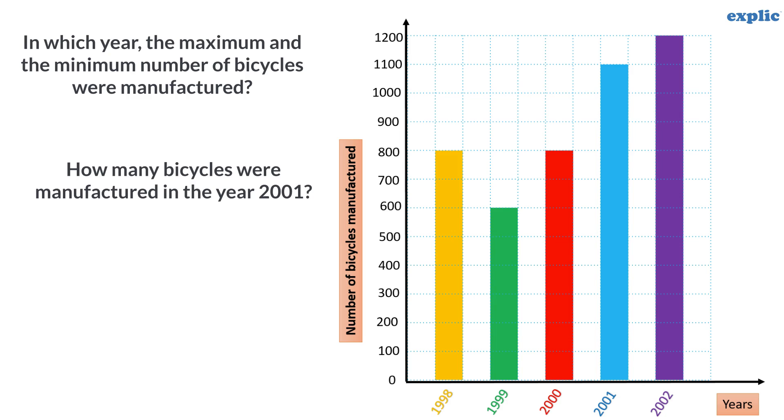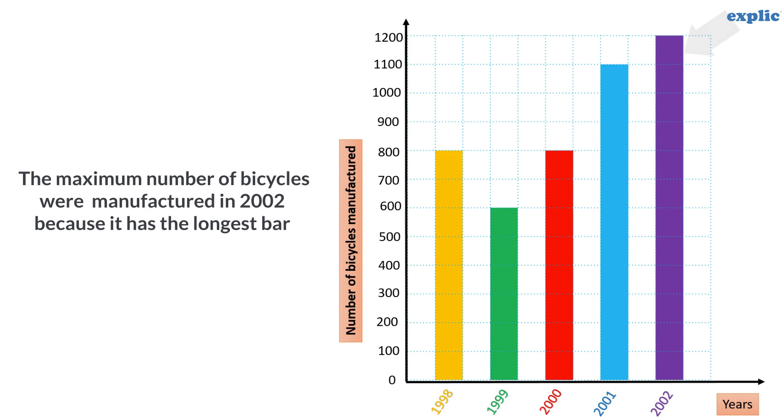How many bicycles were manufactured in the year 2001? And in which two years were the number of bicycles manufactured the same? The maximum number of bicycles were manufactured in 2002 because it has the longest bar.